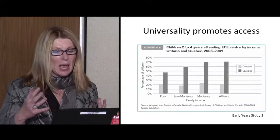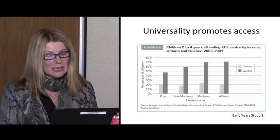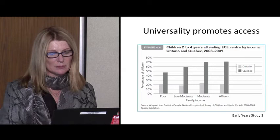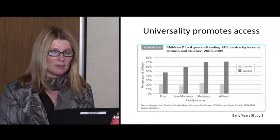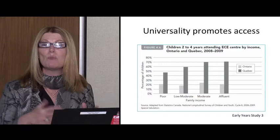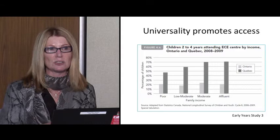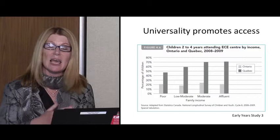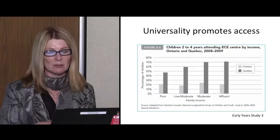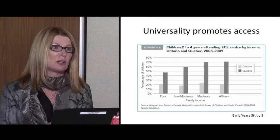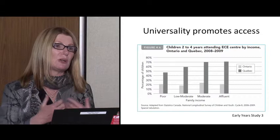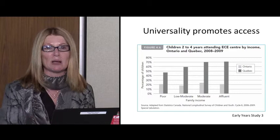Looking at evidence on access for children from low-income families: the dark bar is Quebec and the light bar is Ontario. The difference is that Quebec takes a more universal approach to early childhood provision than Ontario does. Most of Ontario's public funding for child care is targeted to disadvantaged families. Although there is a gradient — better-resourced families are more likely to enroll their child in an early education program — low-income kids are still doing better in Quebec under the universal approach than in Ontario, where almost all resources are targeted.